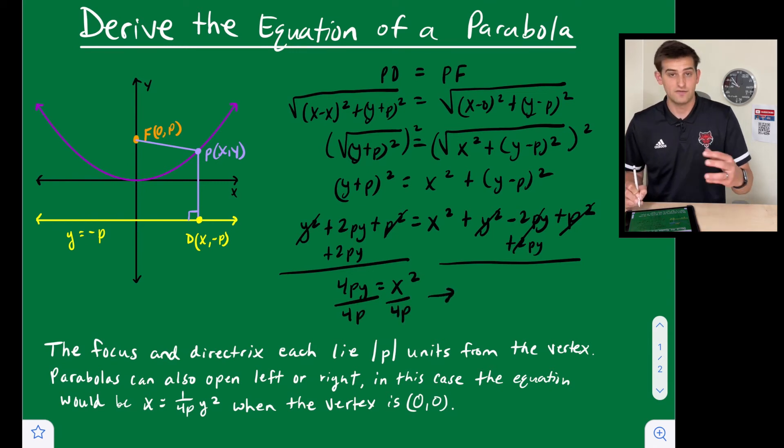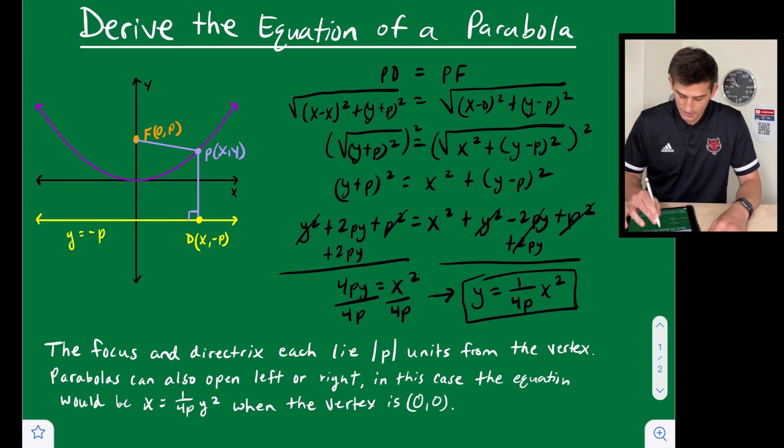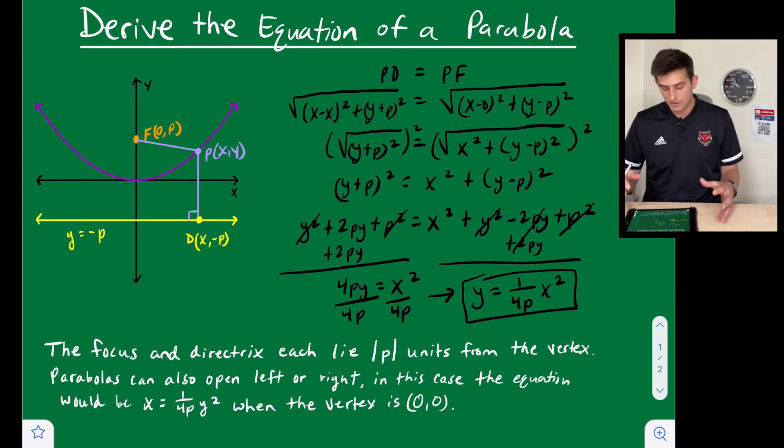And that's going to give us our final equation, which is going to be y = 1/(4p) × x². So this right here, y = 1/(4p) × x², would be our standard equation for our parabola that has its origin or its vertex at the origin.